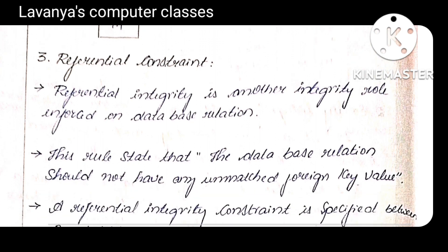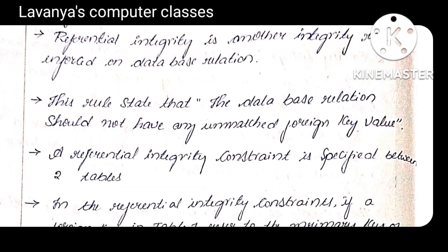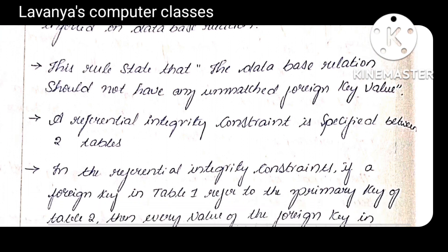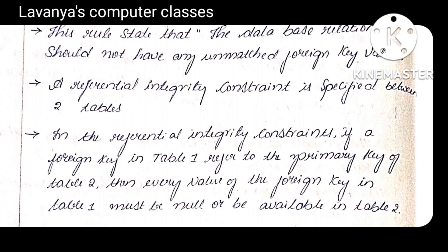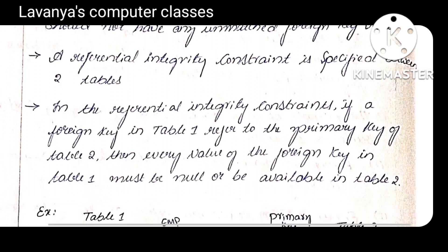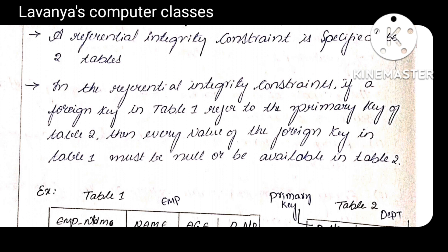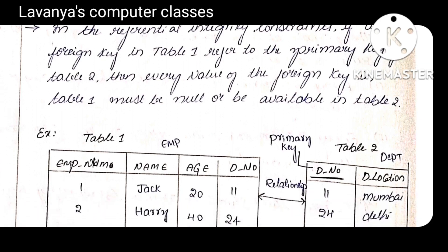Referential integrity constraint: to enforce referential integrity we need two tables — one is the master table and the second is the slave (sub) table. Whenever you want to enter values in the sub table, those values must match with the master table. Before entering any information in the sub table, it always refers to the values in the master table. That's why it is called a referential constraint.